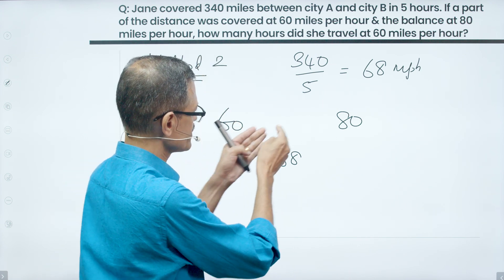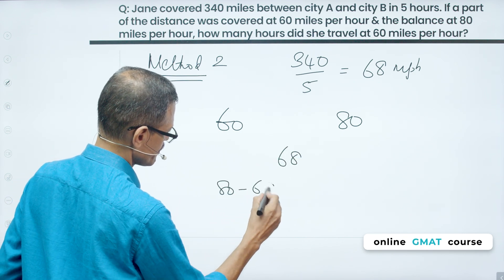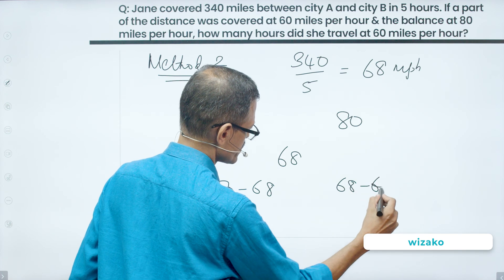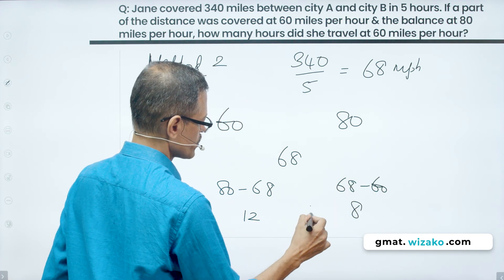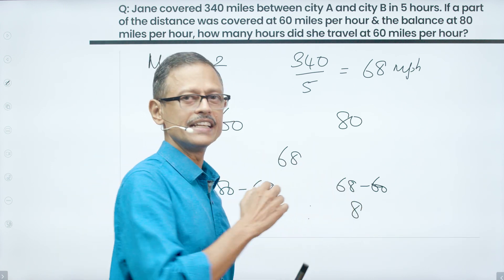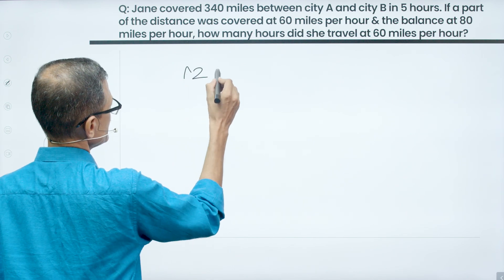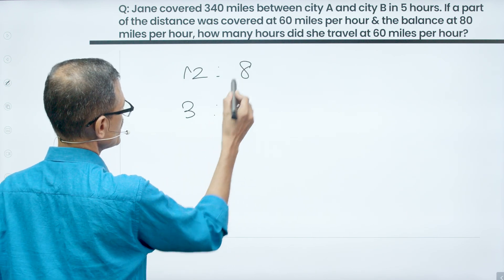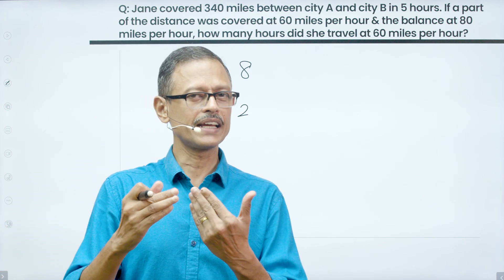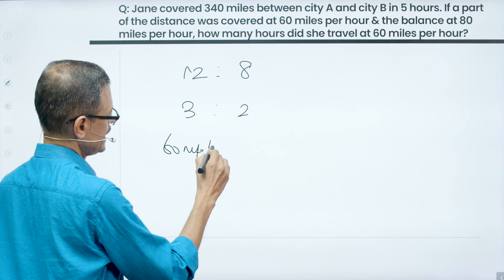So low average, high average mean, high minus mean 80 minus 68 which is equal to 12 and 68 minus 60 which is equal to 8. So ratio of the times that she took to travel 60 and 80 is 12 is to 8. Let's reduce it to its least form. 12 is to 8 is nothing but 3 times 4 and 2 times 4. So 3 is to 2 is the ratio of the time taken to travel 60 mile per hour and 80 mile per hour.